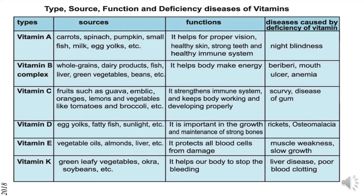Vitamin D. Sources include egg yolks, fatty fish and sunlight, etc. Functions: it is important in the growth and maintenance of strong bones. Diseases caused by deficiency of vitamin D are rickets and osteomalacia.